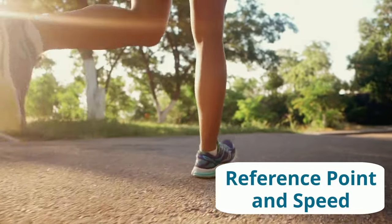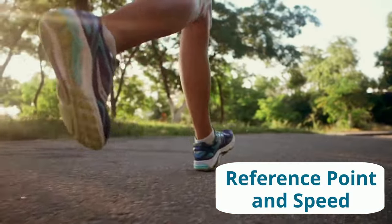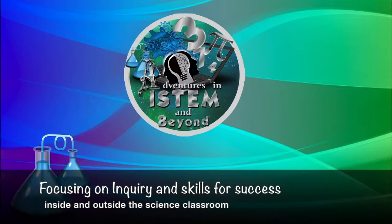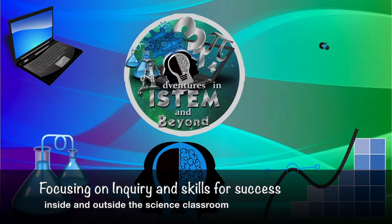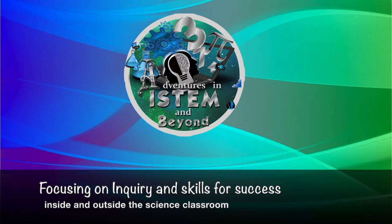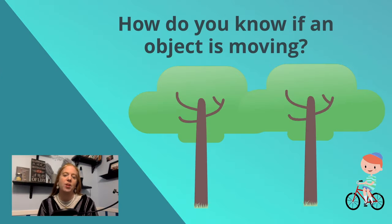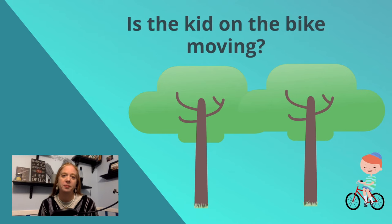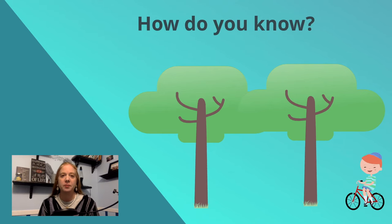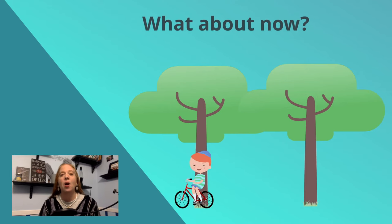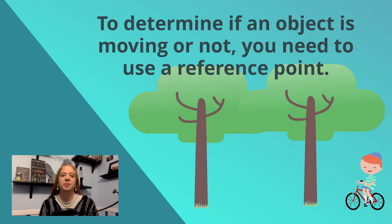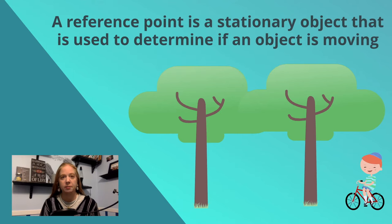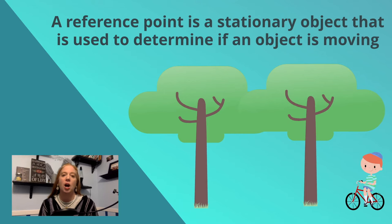Reference point and speed. How do you know if an object is moving? To determine if an object is moving or not, you need to use a reference point. A reference point is a stationary object that is used to determine if an object is moving.